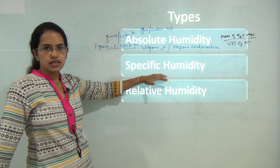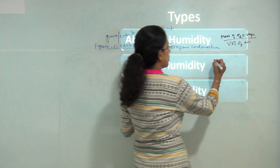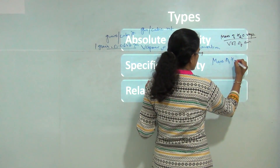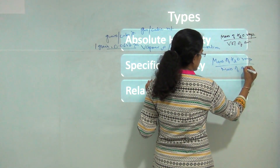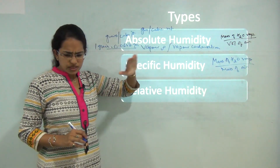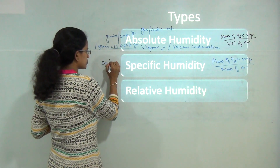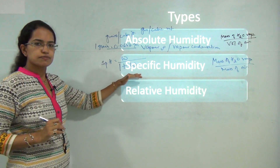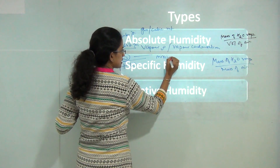Next is specific humidity. Specific humidity is the mass of water vapor per unit mass of air. It can be written as mixing ratio divided by 1 plus mixing ratio, where W denotes the mixing ratio.